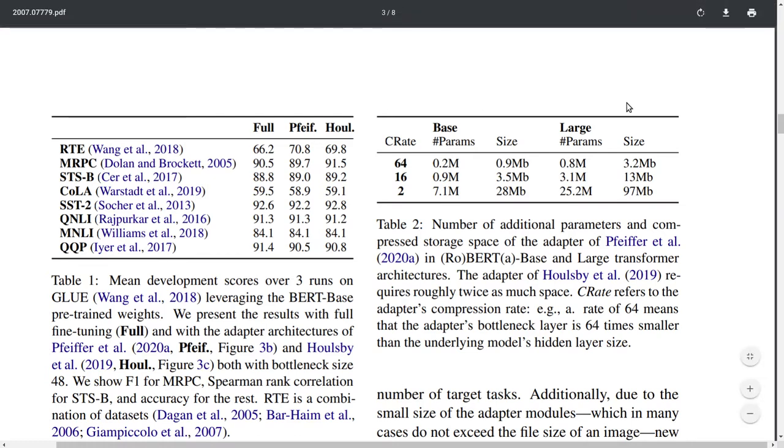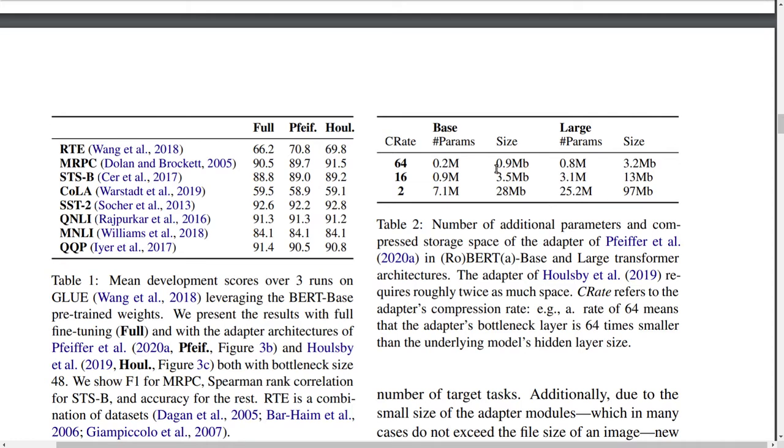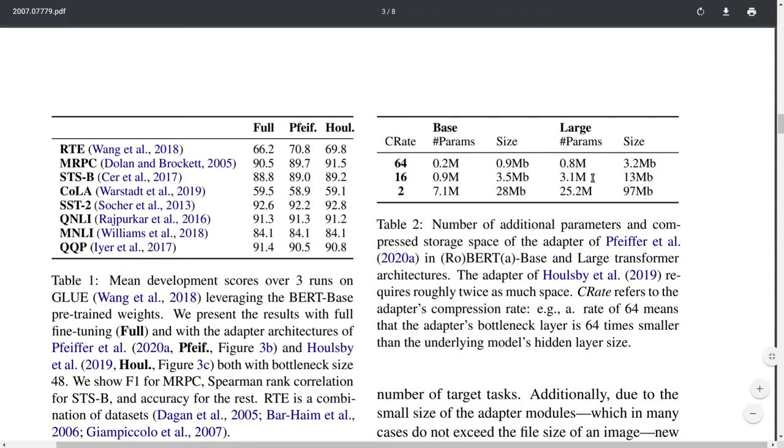The storage saving can be quite significant. Adapter models can range in size from one megabyte up to 100 megabytes, which is a huge saving versus having a couple of gigabytes for a new BERT architecture for each task or language.